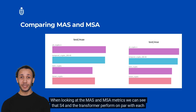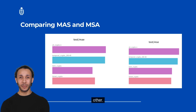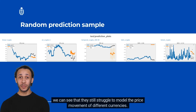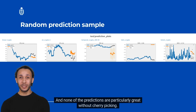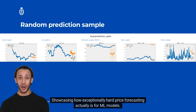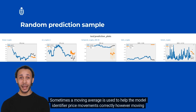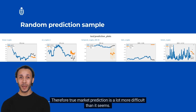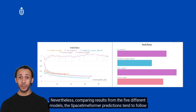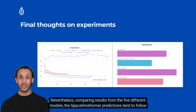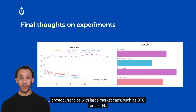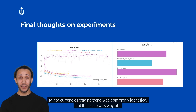When looking at the results, it is not immediately clear which model performs best. Plotting the models' performances side by side shows that the Spacetime Former and S4 perform quite similarly on MAE and MSE metrics, performing roughly on par with each other. However, these models do not perform exceptionally well — when compared against a random sample, they still struggle to model price movements accurately. None of the predictions are particularly great without cherry-picking, showcasing how exceptionally hard price forecasting is for ML models. Moving averages cannot be used for real market predictions as they require prior information about the time series.